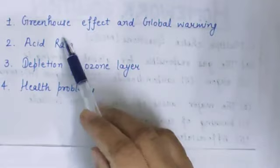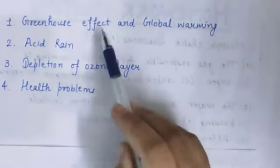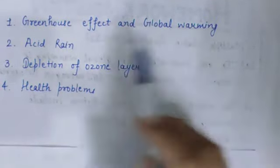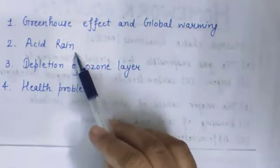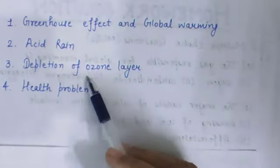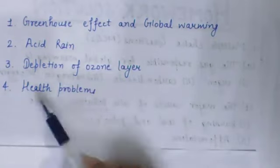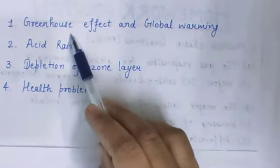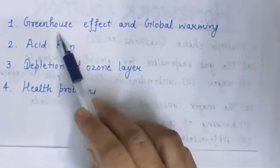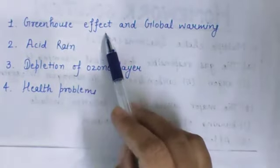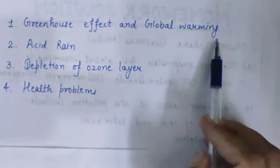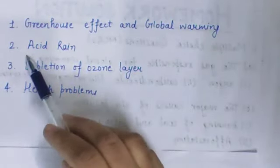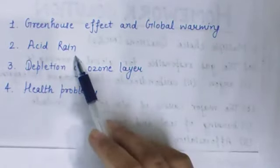Students, the effects of air pollution are: first, greenhouse effect and global warming; second is acid rain; third is depletion of ozone layer; and last is health problems. In the previous lecture we studied greenhouse effect and global warming, so in this lecture we will start with the second effect, that is acid rain.